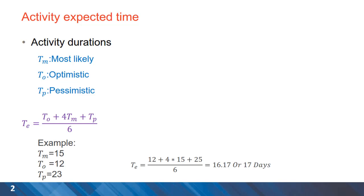For activities, sometimes we have an optimistic estimation of the time, a most likely estimation, and a pessimistic estimation. If that is the case, a triangular distribution will be our distribution for the duration, and we can calculate the expected time using the formula: the sum of optimistic time plus four times the most likely duration plus pessimistic time, divided by six.